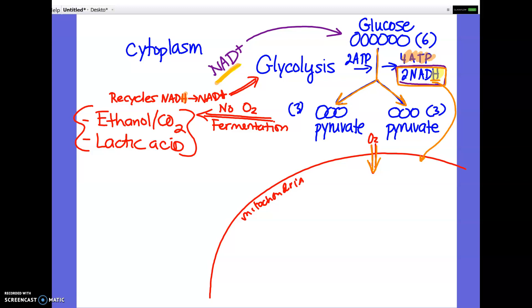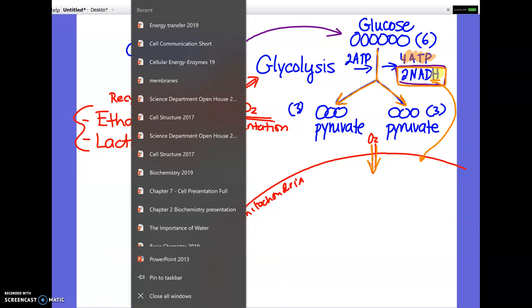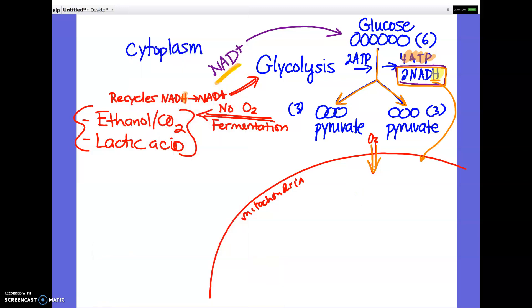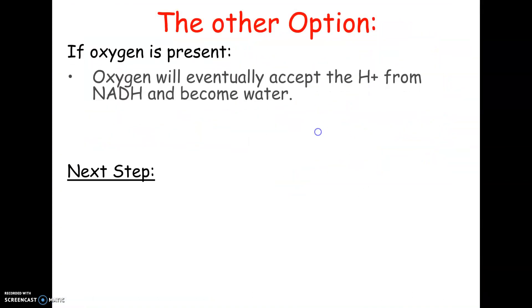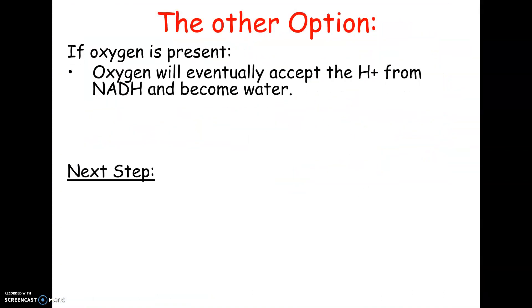So we're going to pick up now with what happens if oxygen is present. If oxygen is present, the oxygen is actually what's going to end up picking up those hydrogens from NADH. Either way, NADH has to get rid of the hydrogens, but if oxygen is present, that's going to happen later on in the cell respiration process. And in the best case scenario, about 40% of the energy from glucose is harvested, meaning captured in ATP.